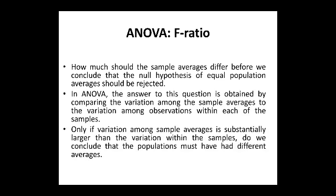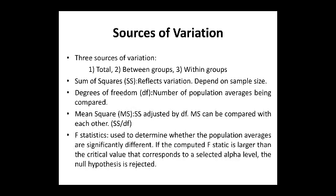How much should the sample averages differ before we conclude that the null hypothesis of equal population averages should be rejected? In ANOVA, the answer is obtained by comparing the variation among the sample averages to the variation among observations within each sample. Only if the variation among sample averages is substantially larger than the variation within the sample do we conclude that the populations must have had different averages.